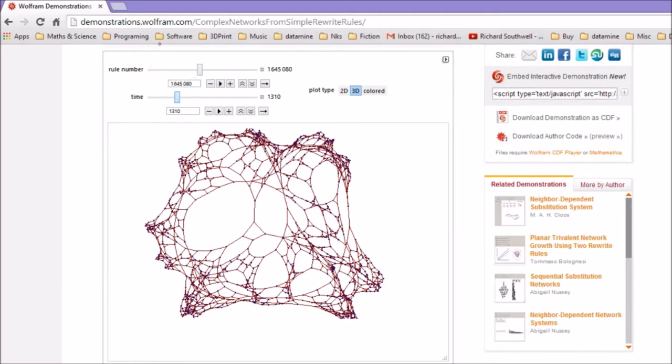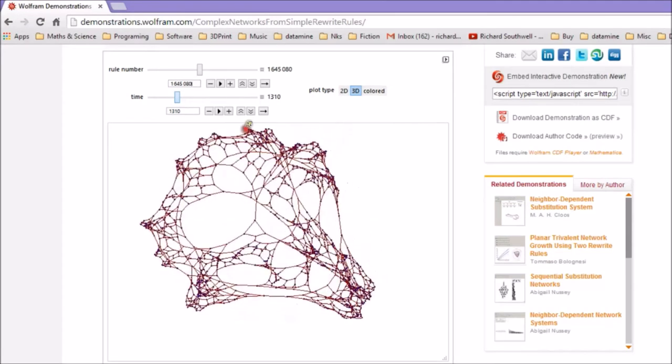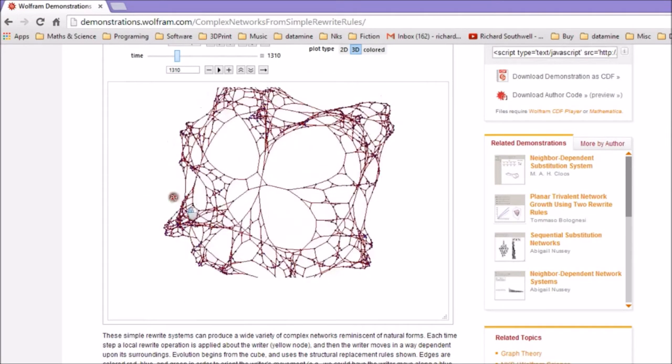And once you've done that, you just write down the rule, what's in this case, one, six, four, five, zero, eight, zero, write down that rule in a notepad or something, and keep searching. Once you've found three different rules like that to make different structures, but all have this similar kind of feature of looking kind of like this, then send it to me.